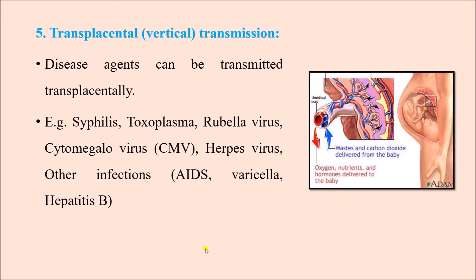Next is transplacental or vertical transmission — certain infectious agents can be transmitted from the mother to the child transplacentally. Examples are syphilis, toxoplasma, rubella virus, cytomegalovirus (CMV), herpes virus, and other infections including HIV/AIDS, varicella, etc. Rubella virus, for example, causes congenital rubella syndrome. These are the examples of transplacental or vertical transmission.